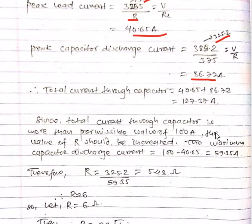The total current through the capacitor will be the sum of these currents, which will be 127.37 ampere.